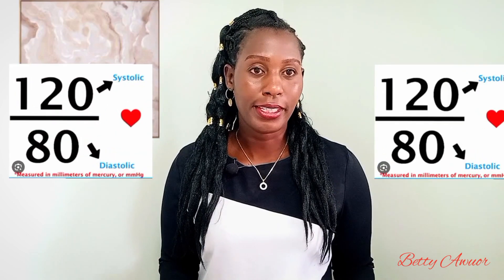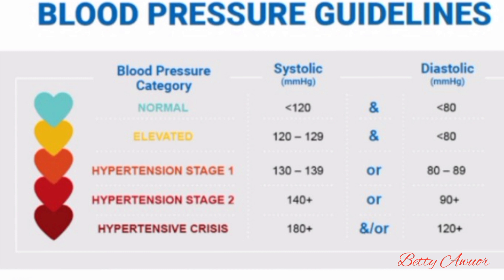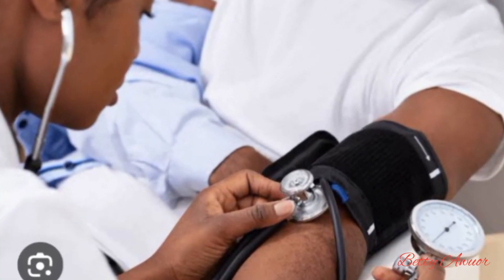It is usually recorded as systolic over diastolic in millimeters of mercury, and normal blood pressure is 120 over 80. Here is a guideline showing normal blood pressure, hypertension stage one, hypertension stage two, and hypertensive crisis. Note that either the diastolic or systolic number can be used for diagnosis — when one of them is high, you can be diagnosed with a certain stage of hypertension. You need to track your numbers and ask about significant changes, as this may help you identify your triggers.